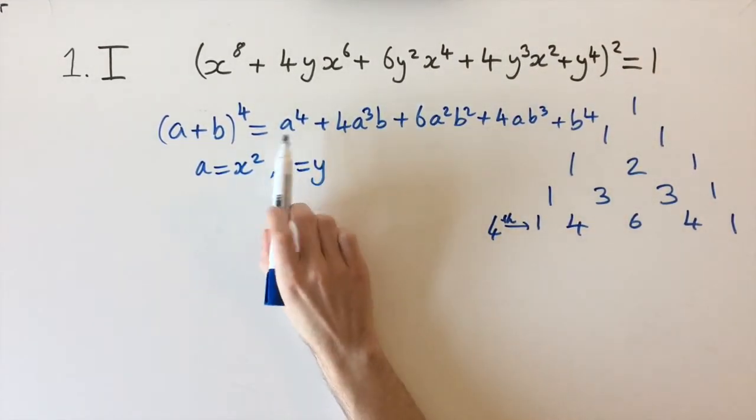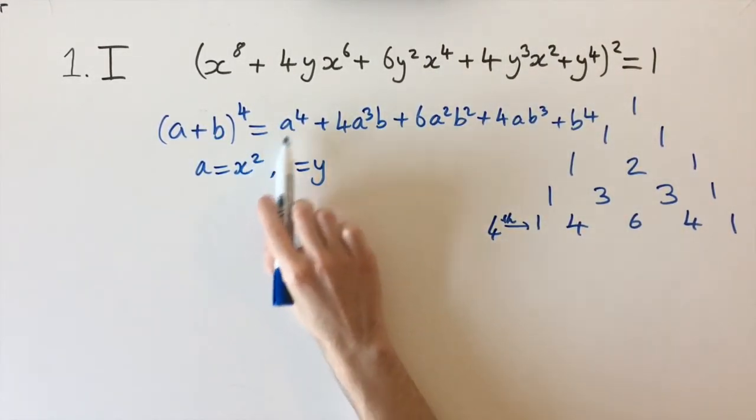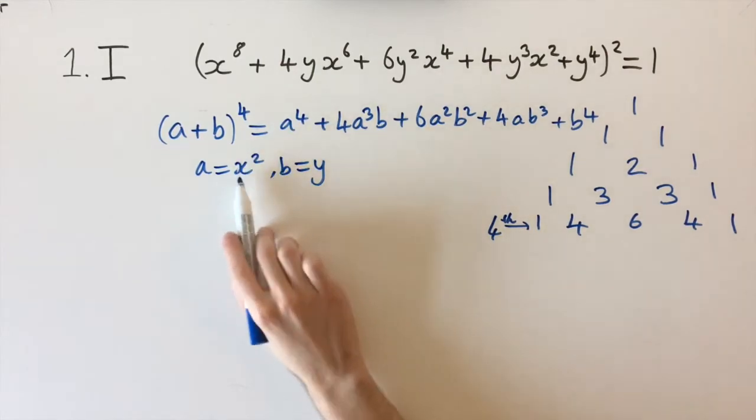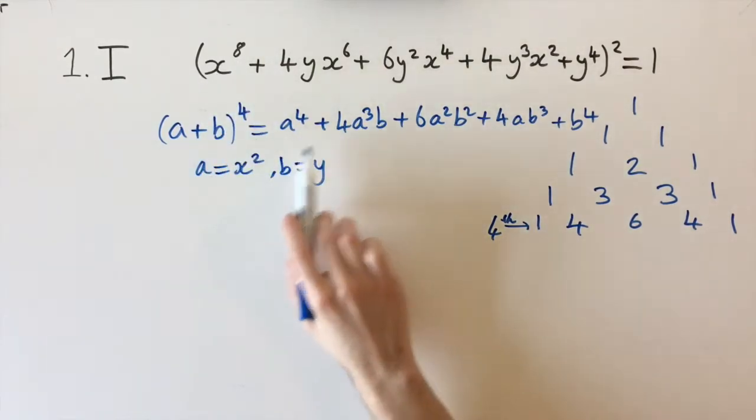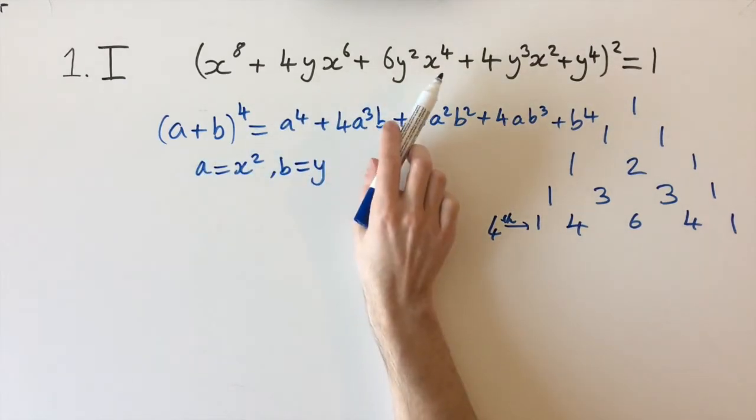Since the laws of indices allow us just to multiply the powers, so 2 and 4, that would give us x to the power of 8. This lines up exactly with this expression.